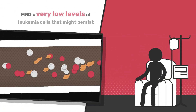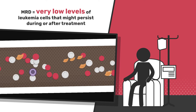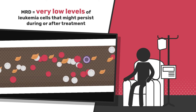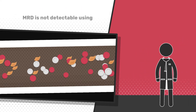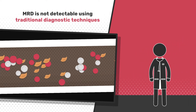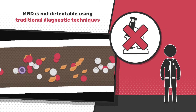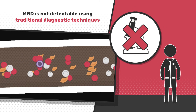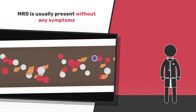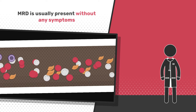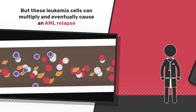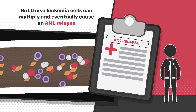MRD is the term given to very low levels of leukemia cells that might persist during or after treatment. MRD is not detectable using traditional diagnostic techniques, such as viewing cells under a microscope. MRD is usually present without any symptoms, but these leukemia cells can multiply and eventually cause an AML relapse.